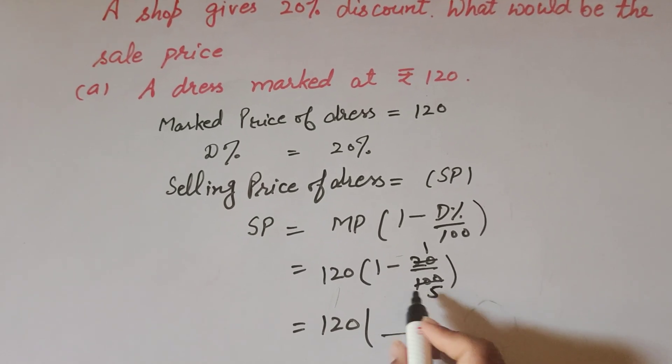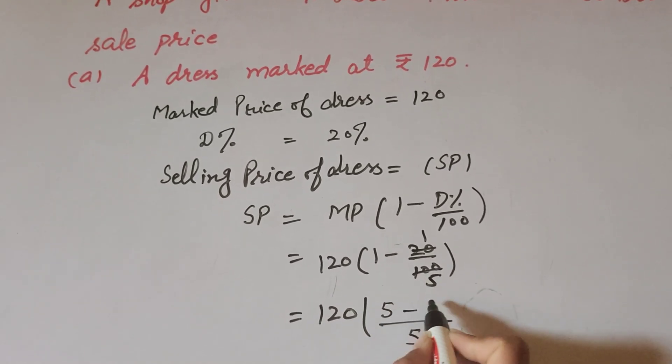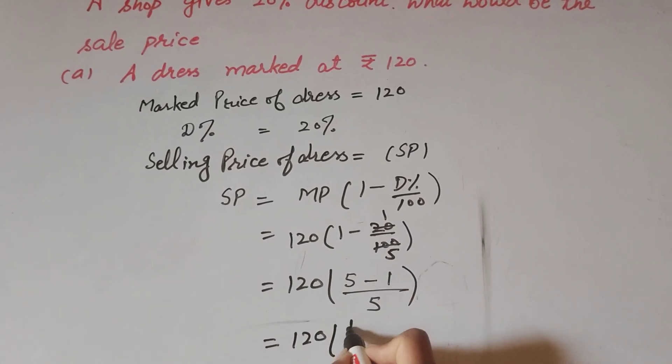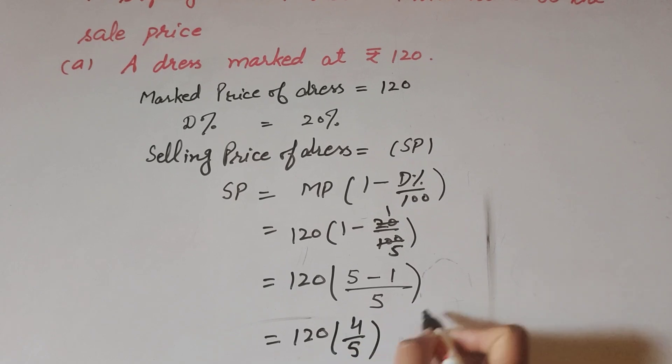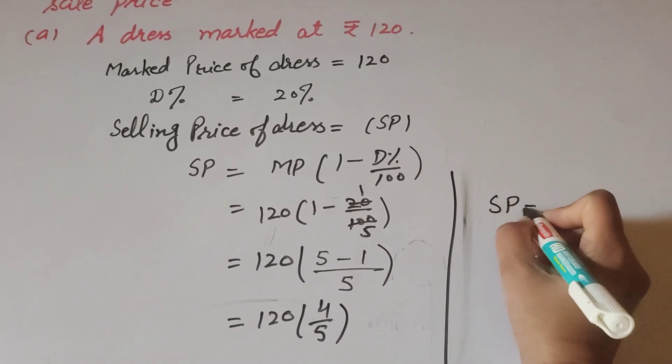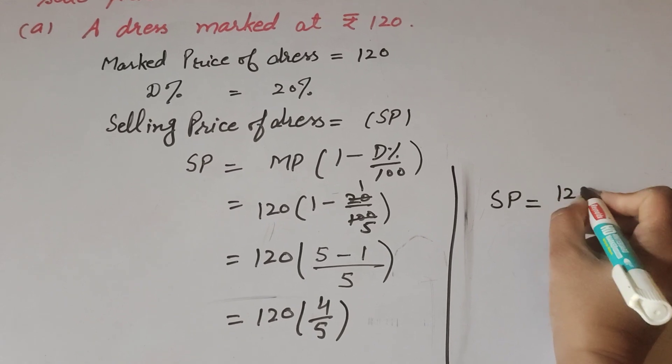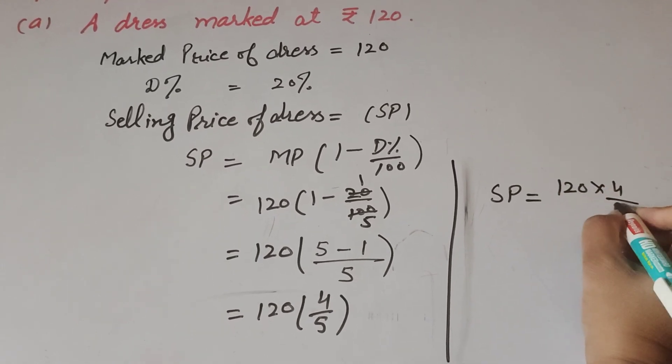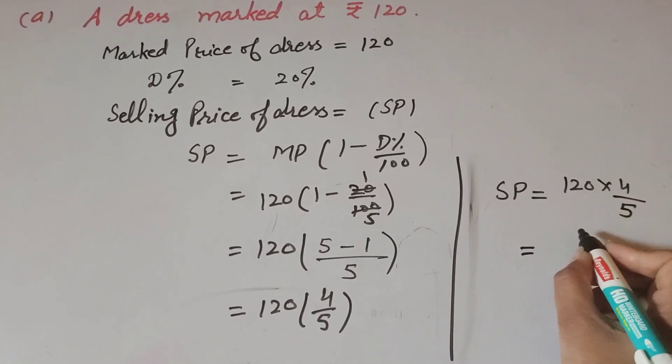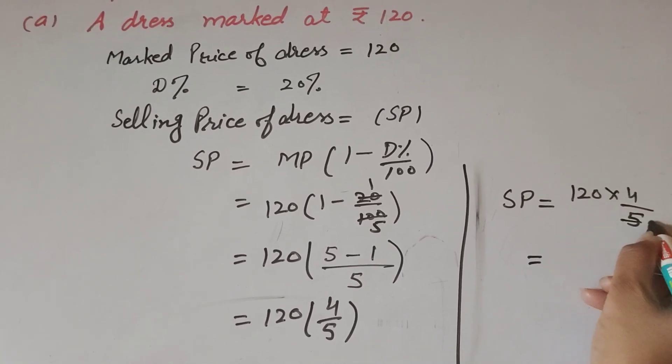So now we take the LCM: 5 multiply by 1, 5 multiply by 1, 5 minus 1. So 120 into (5 minus 1) 4 over 5. SP is equal to 120 multiply 4 over 5. 120 and 5 both are divisible on the table of 5, so we cancel them. 5 ones are 5, 24 fives are 120.